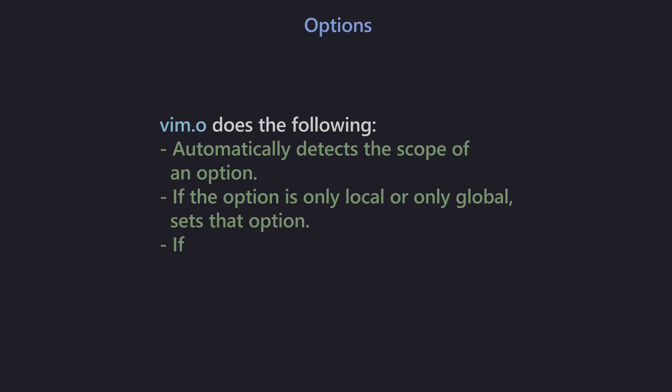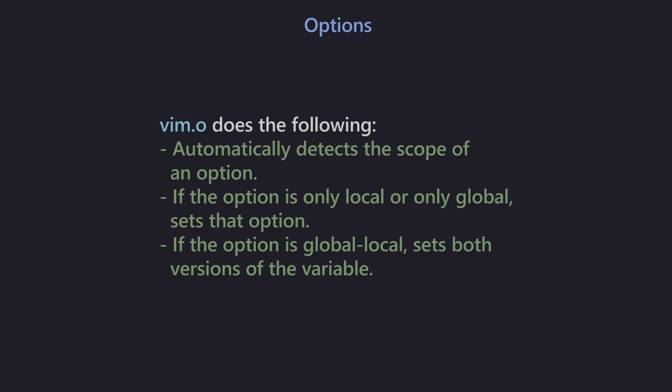Whenever we use vim.o, we're actually setting both the global option if it's available and the local option if it's available. If you set an option, it first checks if there's a global version and sets it, but also if there's a local version it sets that too — supposedly to prevent confusion, though it can end up being more confusing. Additionally, with vim.o we don't have access to utility functions like append, prepend, or remove like we do with vim.opt. vim.o strictly returns the raw value — we can only read and write it.